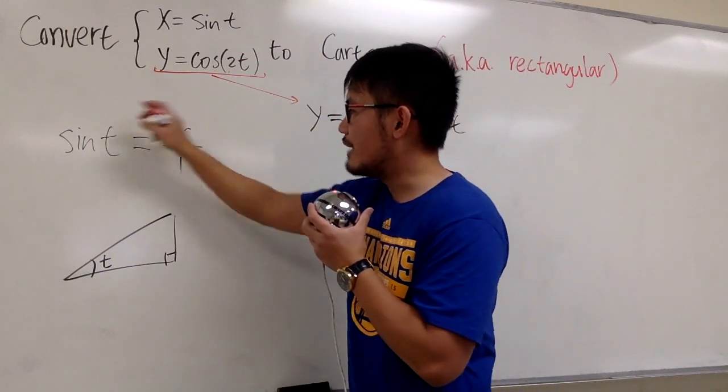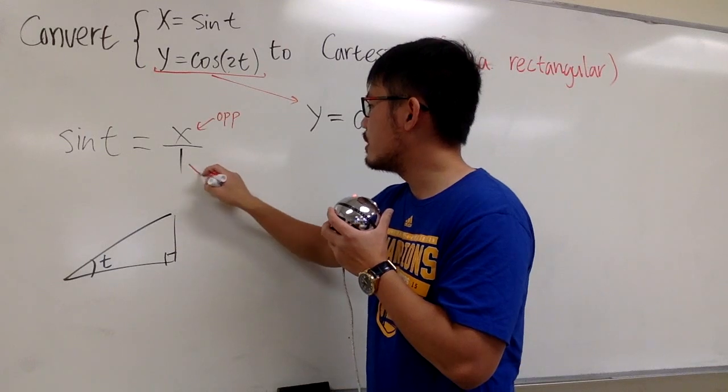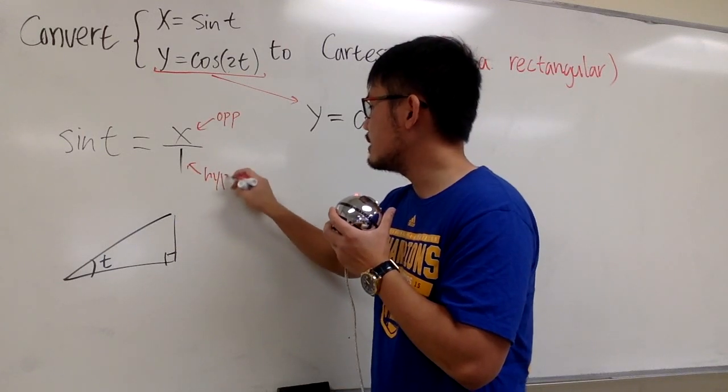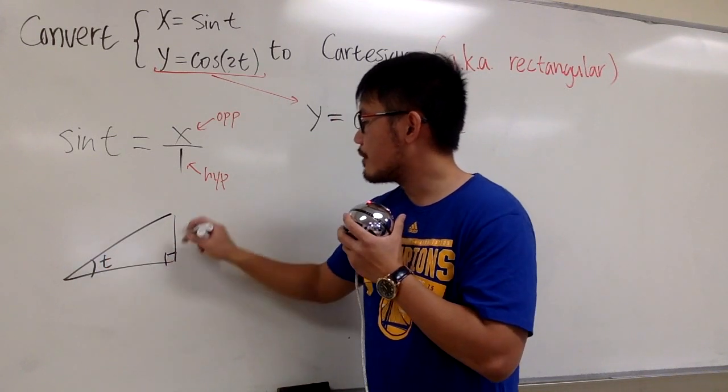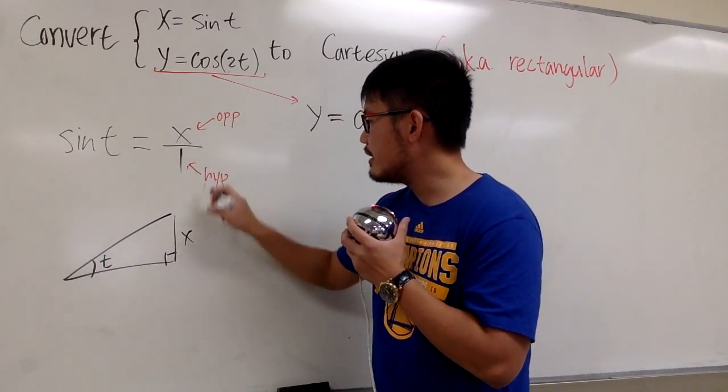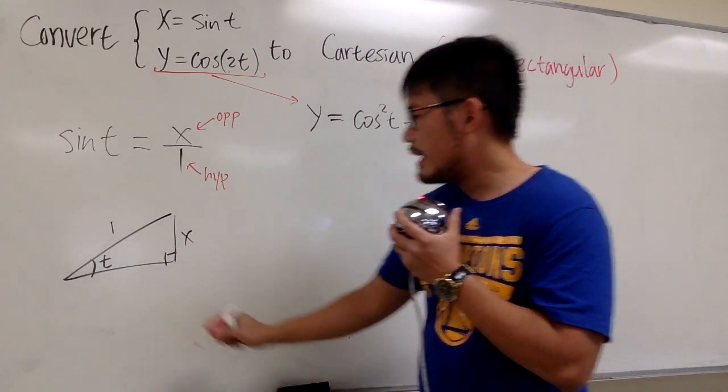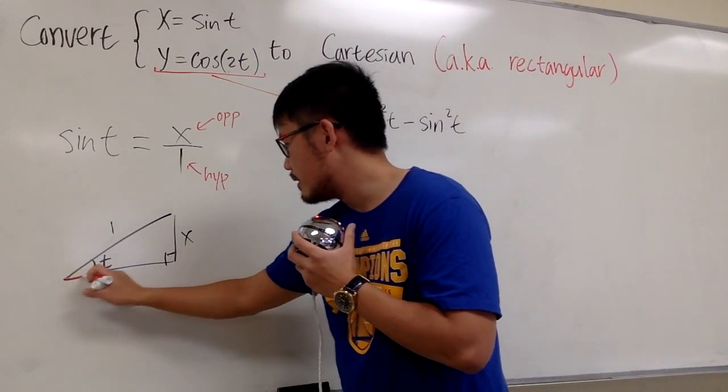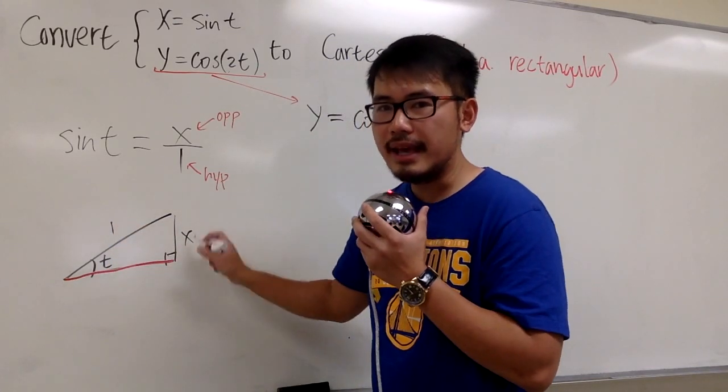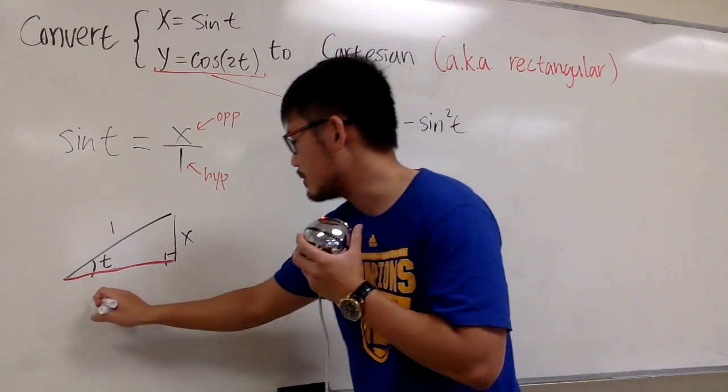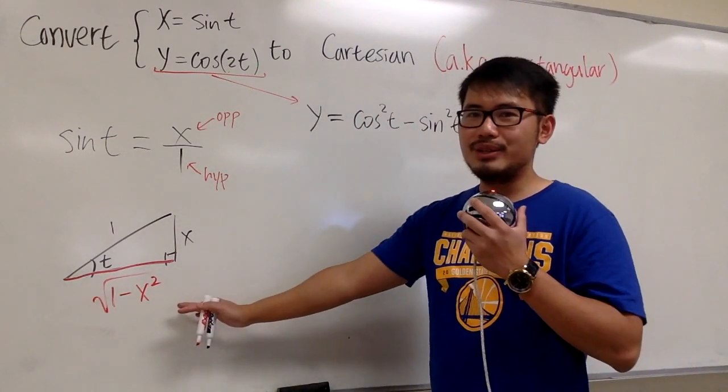In a right triangle, when we have sine, this means we have the opposite over the hypotenuse. So because the t is right here, we know the x is the opposite, which is right here, and then the hypotenuse will be labeled here for the 1. And we have to figure out this side. And for this side, it's just 1 squared minus x squared, and we take the square root. So, square root of 1 minus x squared. And we are ready to go.